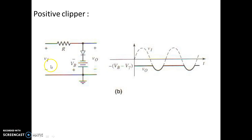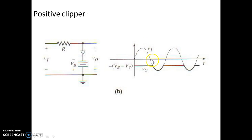The figure shows a simple diagram for a positive clipper and the input-output waveforms. The circuit contains a resistor R, a diode, and a biasing voltage. The input is given as Vi and output is taken as Vo. In the waveforms shown, the dotted line indicates the input and the darker line indicates the output waveform.